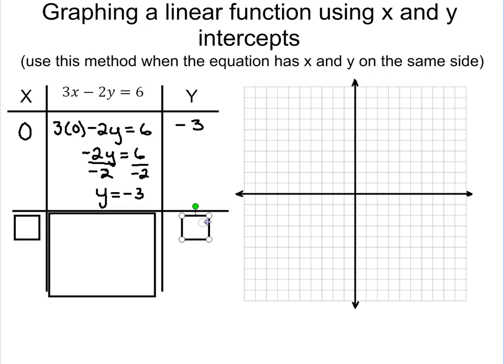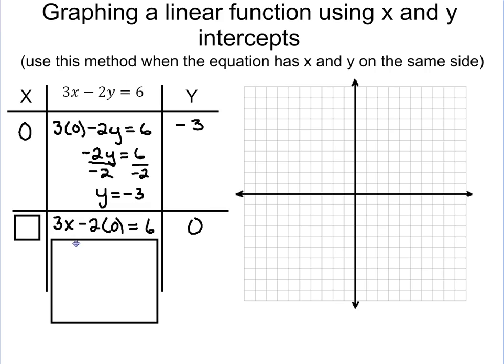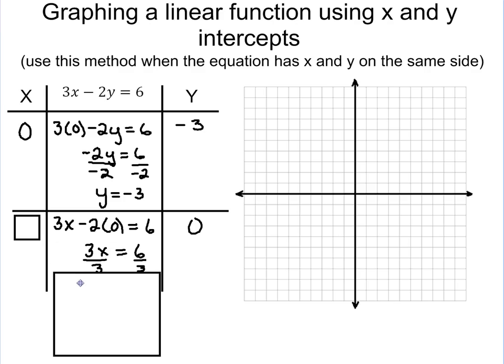And we're going to do the exact same thing again. We're going to plug in 0 for the y this time. So we plug in the 0 for the y. So 3x minus 2y equals 6. So 3x equals 6. So x ends up equaling 2.